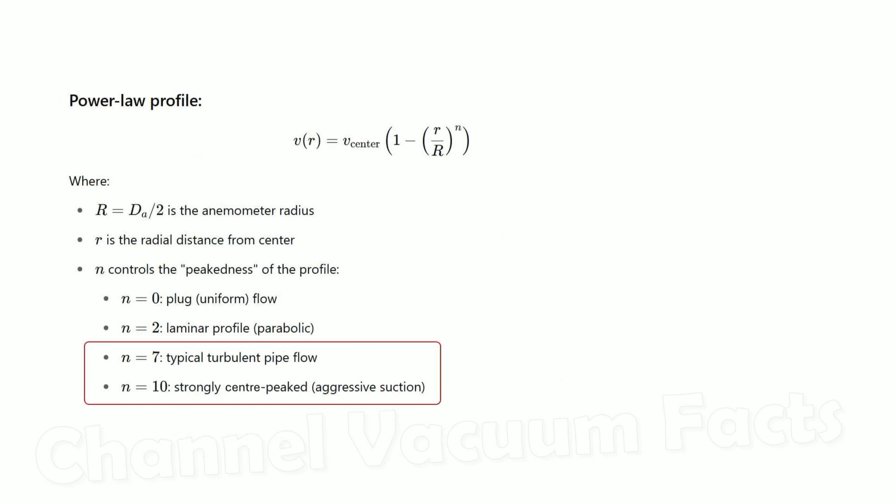Back in our power law profile equation, this means the value of n ranging from 7 to 10 is representative. To calculate the true airflow from the value the anemometer reads, you need to calculate the velocity profile correction factor C, which is the ratio of average to maximum velocities.